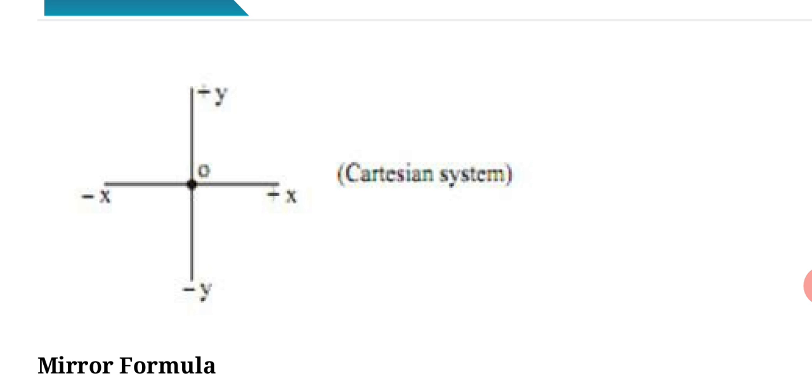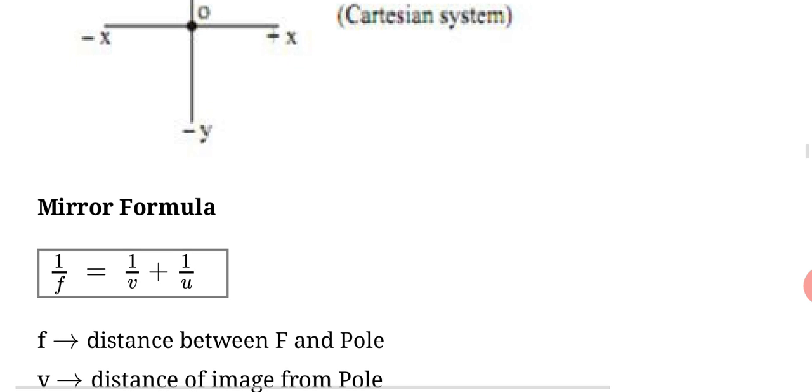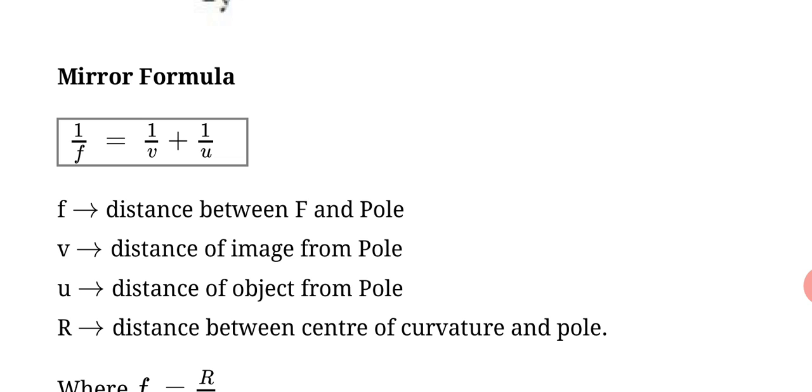You can see this with Cartesian system from math graphs. Mirror formula: focal length f equals one upon v plus one upon u. Where v is distance of image from pole, u is distance of object from pole, and R is distance between center of curvature and pole, the radius between center of curvature and pole.